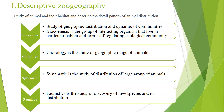The next branch is faunistics. Faunistics is the study of the discovery of new species and their distribution. Faunistics basically studies newly discovered species. As the number of species increases due to new research, faunistics is the field of zoogeography in which we study newly explored or newly discovered species.